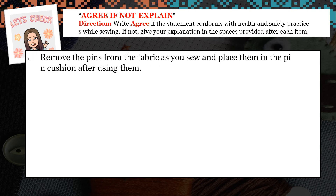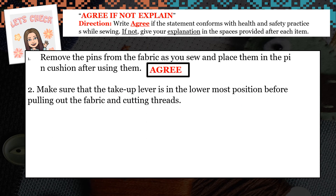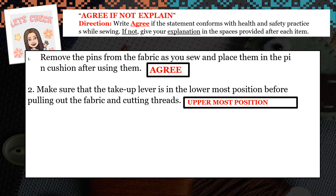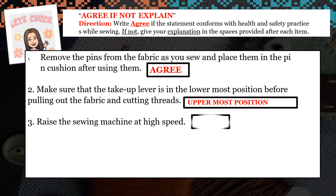Number 1: Remove the pins from the fabric as you sew and place them in the pin cushion after using them. Agree — because the statement is correct. Number 2: Make sure that the take-up lever is in the lowest position before pulling out the fabric and cutting threads. No — it should be the uppermost position. Number 3: Raise the sewing machine at high speed. Of course, no — never raise the sewing machine at high speed.